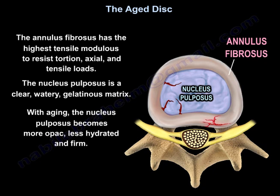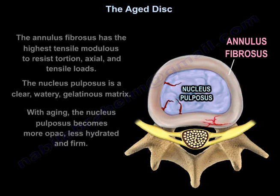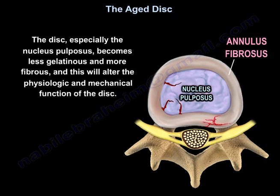The annulus fibrosus has the highest tensile modulus to resist torsional, axial, and tensile loads. The nucleus pulposus is a clear, watery, gelatinous matrix. With aging, the nucleus pulposus becomes more opaque, less hydrated, and firm. The disc, especially the nucleus pulposus, becomes less gelatinous and more fibrous, and this will alter the physiologic and mechanical function of the disc.